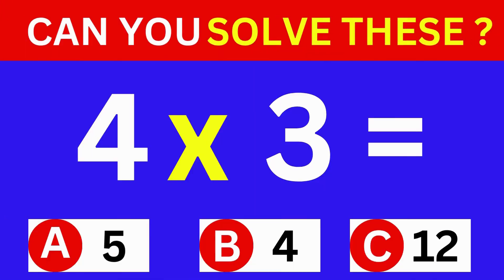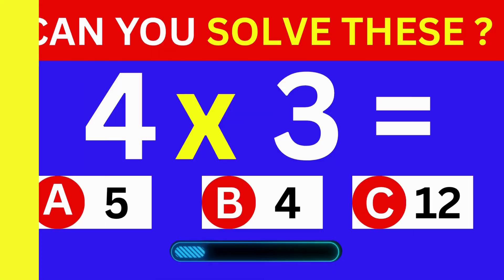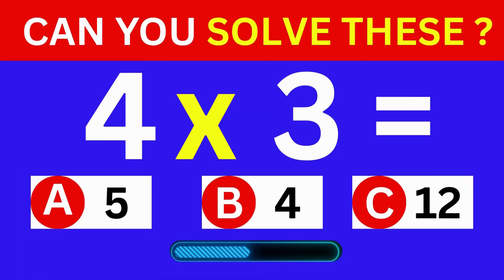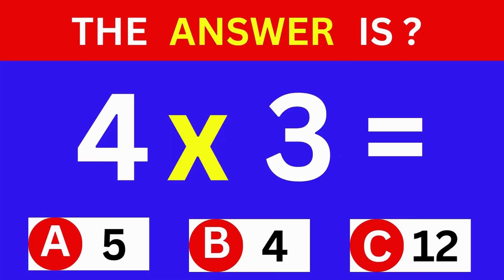4 times 3 equals. A: 5, B: 4, C: 12. The answer is C, 12.